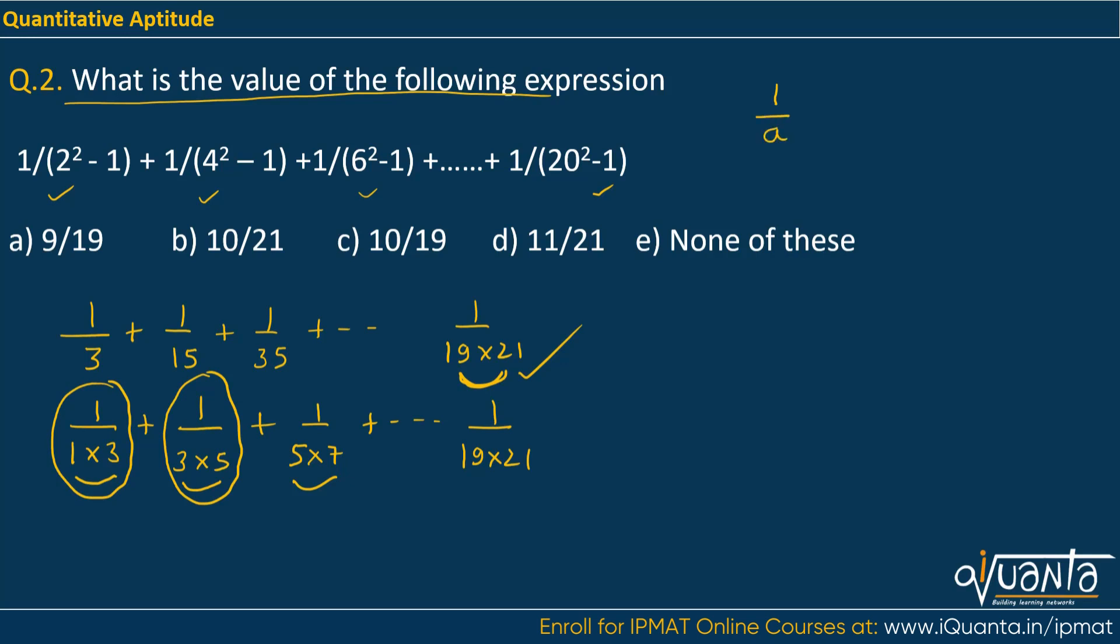Now all these terms can be broken down further. You must have come across 1/a + 1/b where we take LCM as ab. Similarly, 1/a - 1/b equals (b-a)/ab. This first term 1/(1×3) can be written as (1/2)(1/1 - 1/3), which equals 1/3.